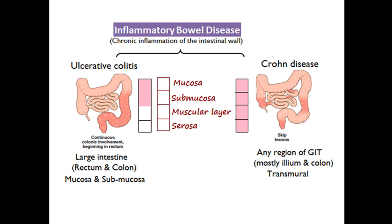In Crohn's disease, all four layers of the intestinal wall are involved. This inflammation of the whole thickness of the intestine is known as transmural inflammation.